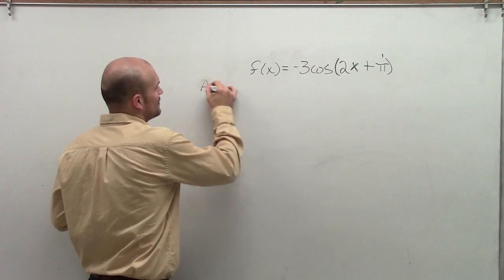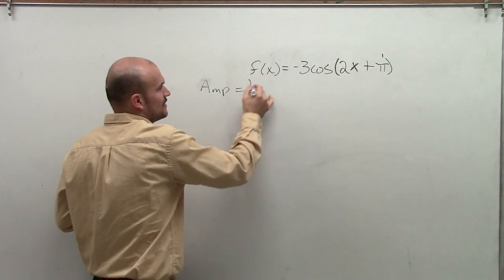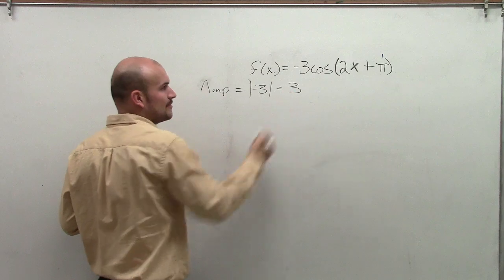So the first thing, let's determine the amplitude. Remember, the amplitude is the absolute value of a, which in this case is -3. Therefore, it's going to be 3.